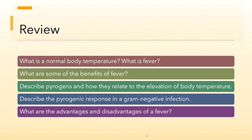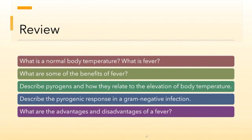To review the pyrogenic response: make sure you know what a normal body temperature is in Celsius, and what it means when a fever occurs — the benefits and disadvantages. Describe the pyrogens and how they are responsible for elevation of body temperature. Know the pyrogenic response in a gram-negative infection; the gram-negative bacteria example was simply the most common way the pyrogenic response occurs, not the only way. That's the end of Part 9 and the end of the innate immunity chapter. I'm looking forward to going over adaptive immunity with you. Hope you enjoyed the chapter and I'll see you on the next one.